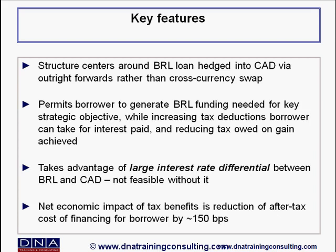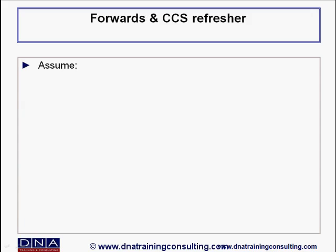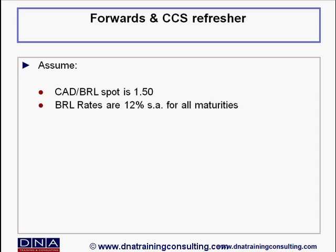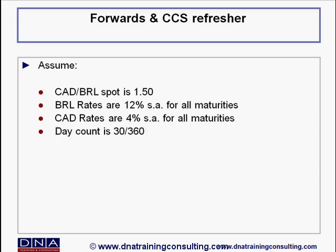Our discussion begins with a review of the mechanics of FX forwards and cross-currency swaps, and the relevant differences between them. We assume that the Canadian dollar/Real spot rate is 1.5, that interest rates in Reals are 12% semi-annually compounded for all maturities, and 4% in Canadian dollars also semi-annually compounded for all maturities, and that the day count convention for both currencies is 360.